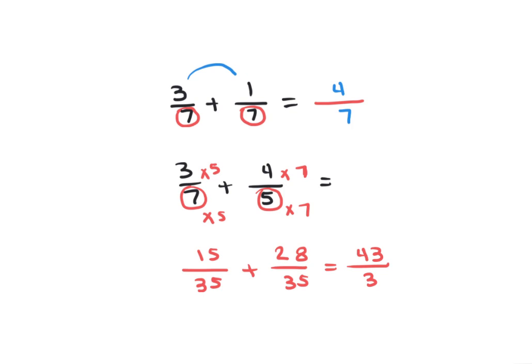We try to simplify the fraction, but we cannot simplify further. However, if required to write as a mixed number, since the numerator is greater than the denominator, this is an improper fraction. How many 35s in 43? One, with remainder 8. So the answer is 1 and 8 over 35.